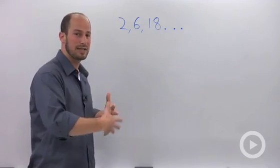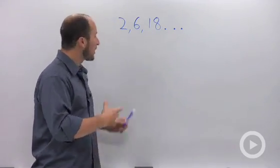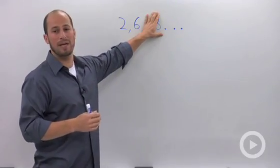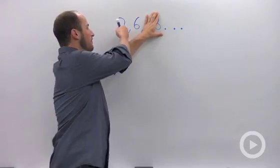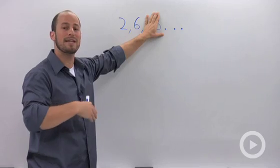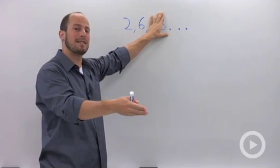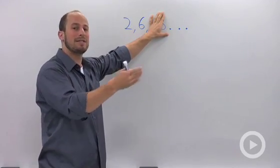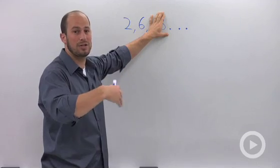If this was just two terms, I wouldn't actually know what's going on, because I could go from 2 to 6 one of two ways: I could either add 4, which would be an arithmetic sequence, or multiply by 3, which tells me it's geometric. So I need that third term to figure out what kind of sequence it really is.